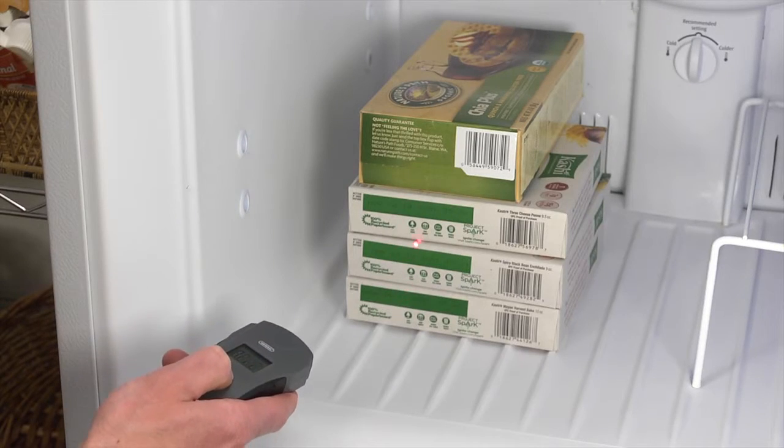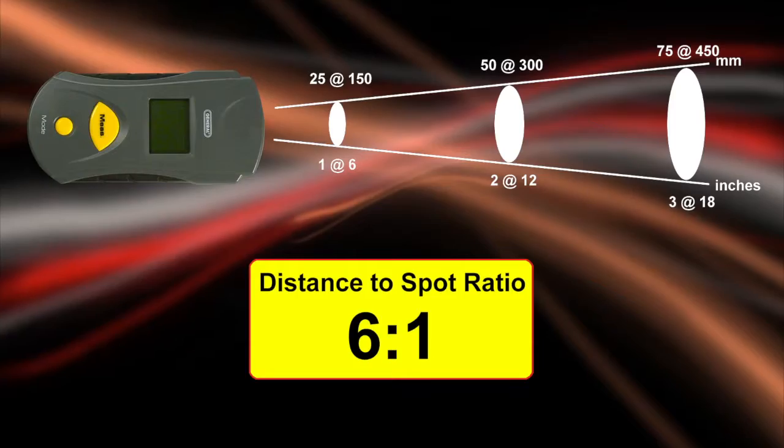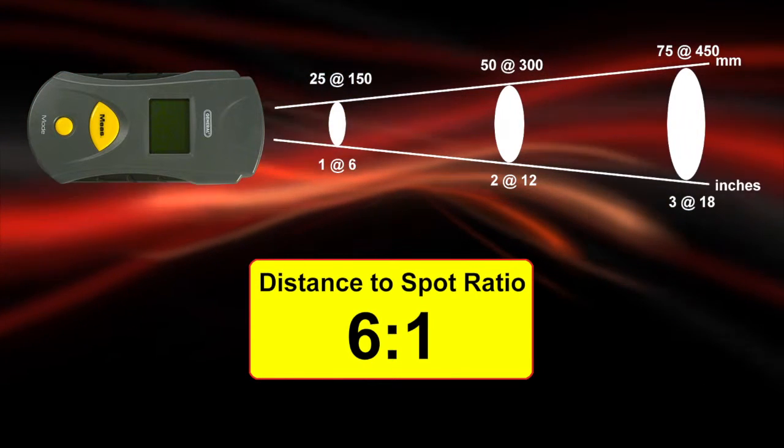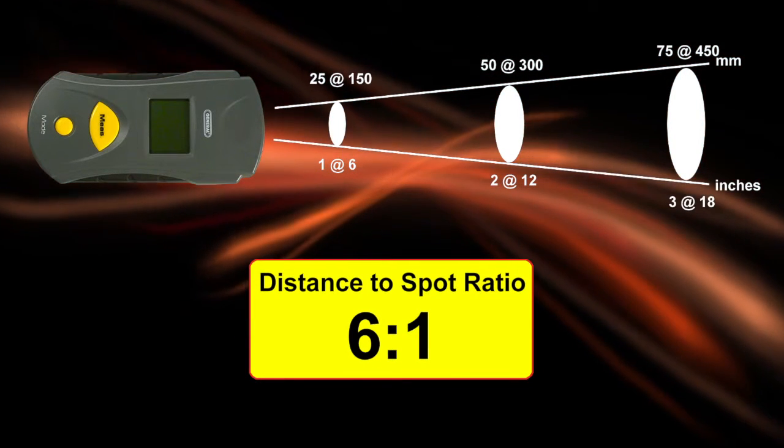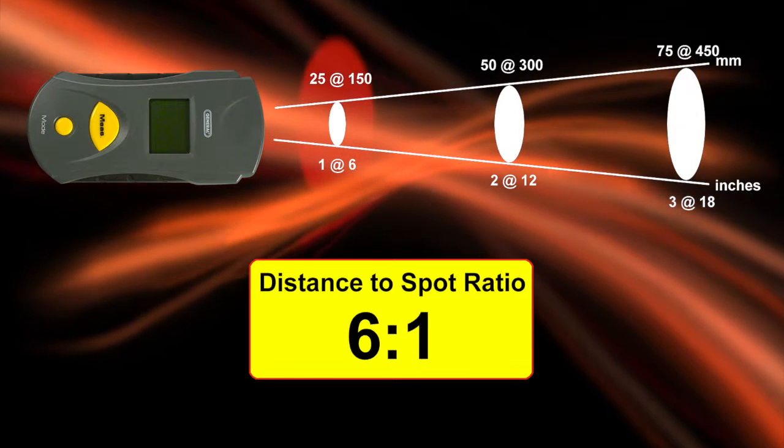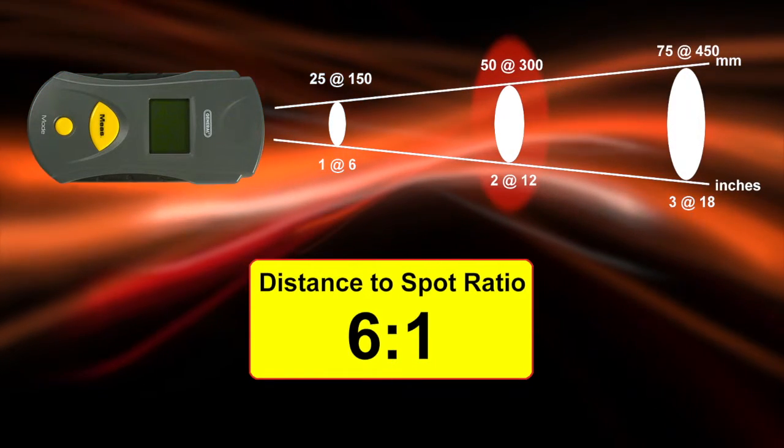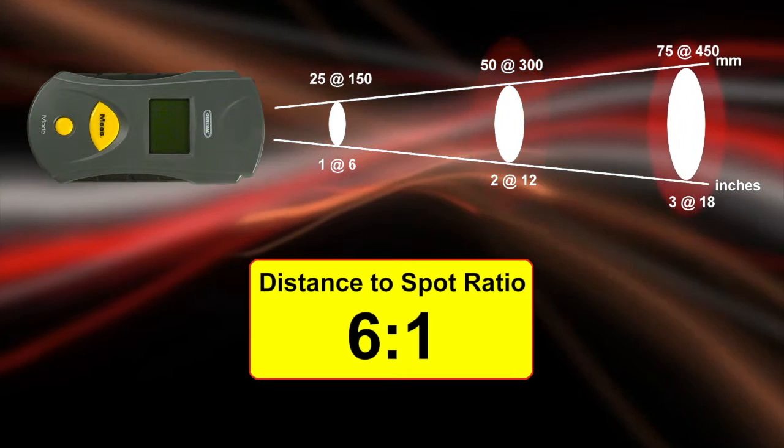Check surface temperatures of foods, machinery, and much more. The IRT-102 boasts a 6-to-1 distance-to-spot ratio with laser targeting. Measure a 1-inch target from 6 inches away, or a 2-inch target from 12 inches, etc.